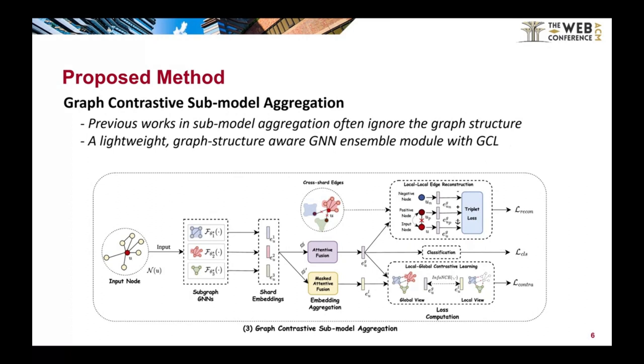Upon completion of submodel retraining, the emphasis shifts to deriving precise predictions from these submodels. Contrary to previous graph unlearning methods that employed simple and graph structure agnostic techniques, we propose graph contrastive submodel aggregation. This advanced ensemble module incorporates graph contrastive learning to account for graph structure. It is also remarkably efficient, requiring minimal data and few epochs for training, introducing only a small computational overhead.